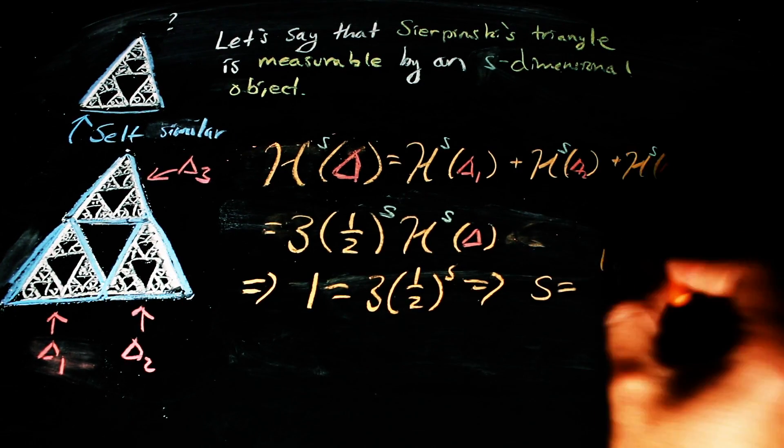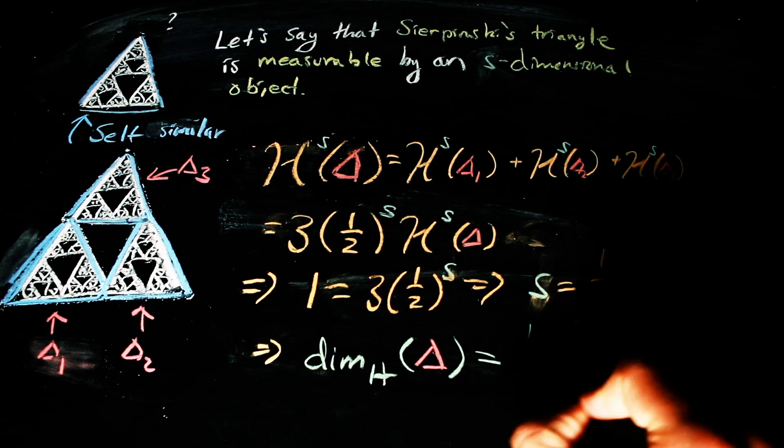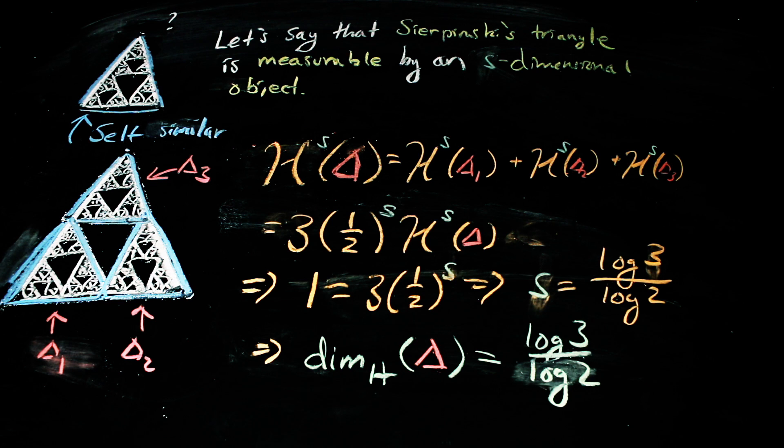The rest is just a little bit of algebra. And we find the dimension of Sierpinski's triangle is log 3 over log 2, which is definitely not a whole number.